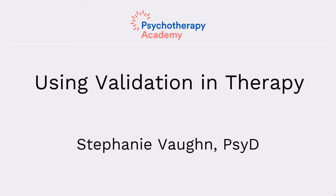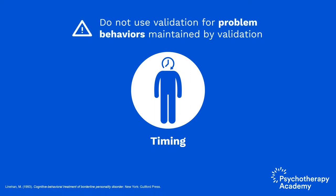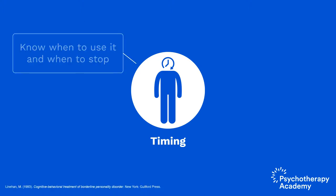When using validation in therapy, number one, we want to consider timing. You don't want to use validation immediately following problem behaviors that are maintained by validation — in other words, where validation is the fuel keeping the behavior going. We don't want to accidentally reinforce, so we've got to be aware of how validation is being received and whether the behavior is increasing, decreasing, or staying the same over time. You want to know when to use it and when to stop.